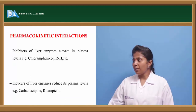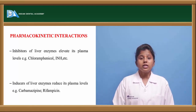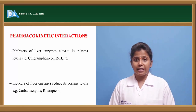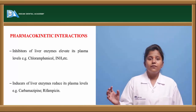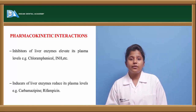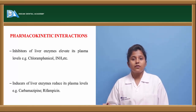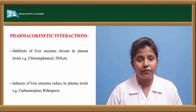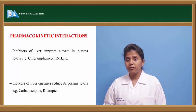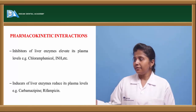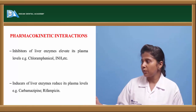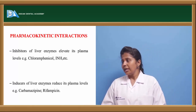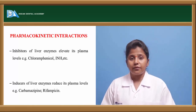Pharmacokinetic interactions of phenytoin: drugs like chloramphenicol and INH (isoniazid) are inhibitors of liver enzymes — if given with phenytoin, they elevate plasma concentration of phenytoin, prolonging its effect. Liver enzyme inducers like carbamazepine and rifampicin, if given with phenytoin, reduce the plasma levels of phenytoin.